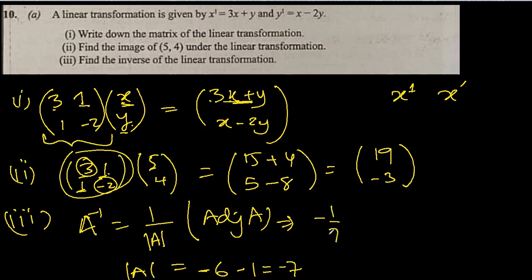For the adjoint, we interchange 3 and minus 2, the diagonals change their places, and we change the sign of the 1s to minus 1. This is the inverse. If you want to expand it, you can write it as 2 over 7, 1 over 7, 1 over 7, and minus 3 over 7. That's the inverse.